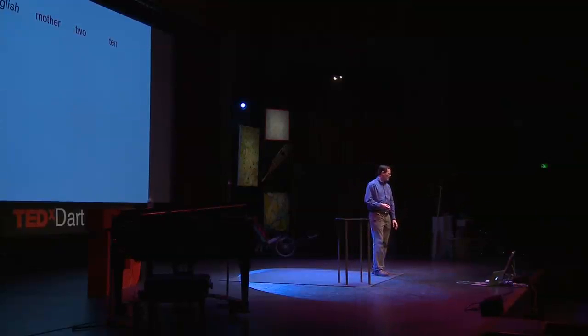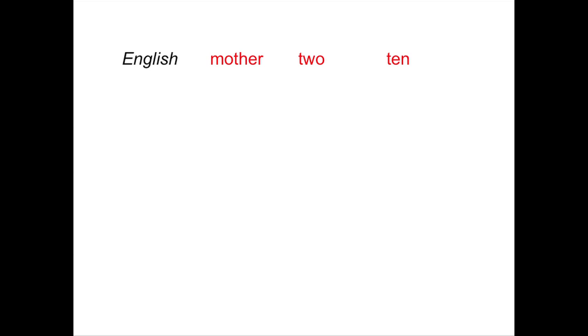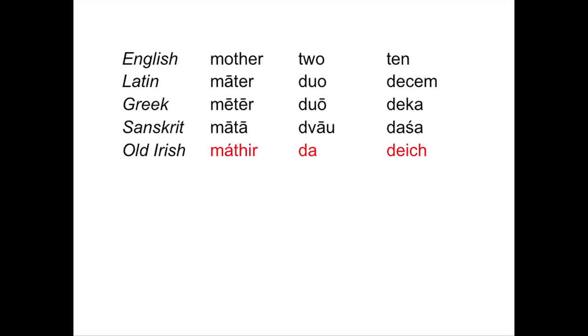If we take those language families and look at words for mother, two, and ten, we can in fact see some similarity. Latin for the Romance languages, ancient Greek: mater, duo, deca — as in decagon, a ten-sided figure. Sanskrit: mātā, dvau, daśa. Old Irish, spoken over a thousand years ago. Russian: mat', dva, desyat. It does not take a genius to look at this data and say those all look similar.